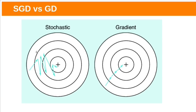If these are the contours of the cost function and here is the minimum, full batch gradient descent starts somewhere here and takes relatively large and relatively less noisy steps towards the minimum. When it comes to stochastic gradient descent, if you start somewhere here it will take very noisy steps towards the minimum, because the gradient is calculated based on a single training example. So sometimes it might take the wrong direction. Stochastic gradient descent requires less memory, but it takes very noisy steps towards the minimum.